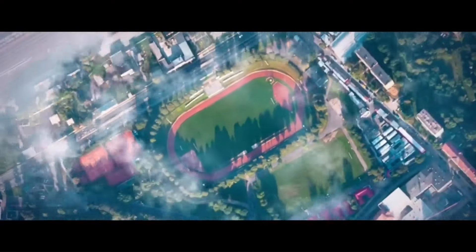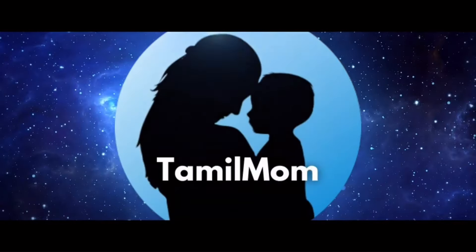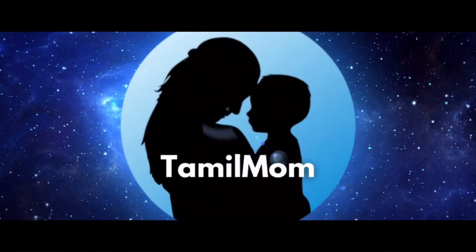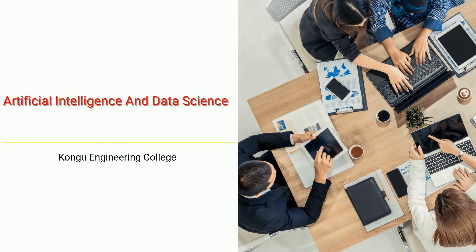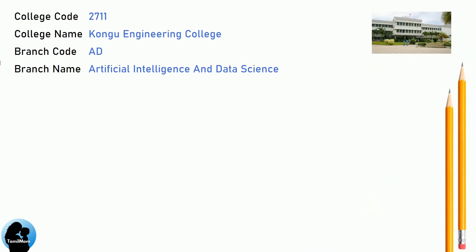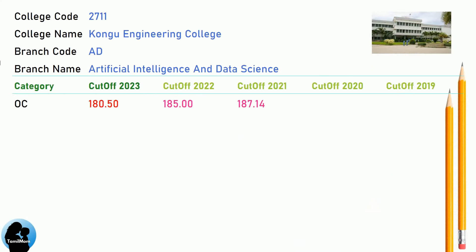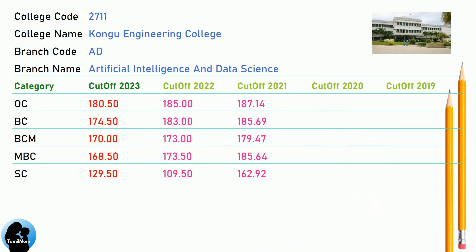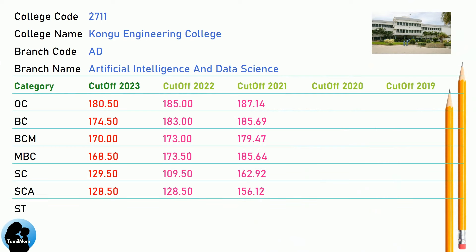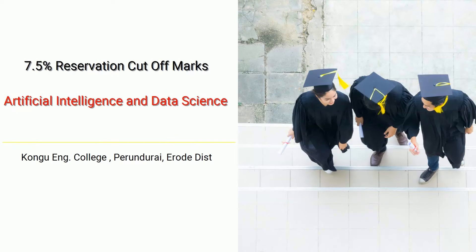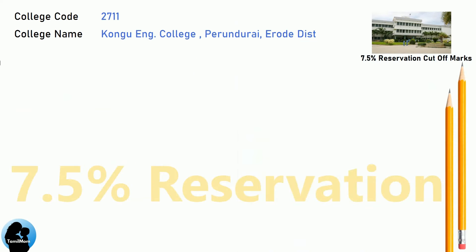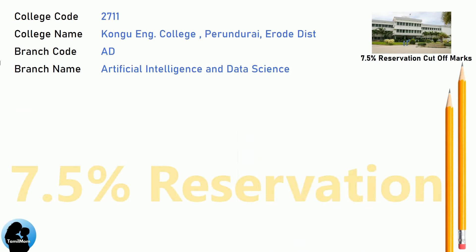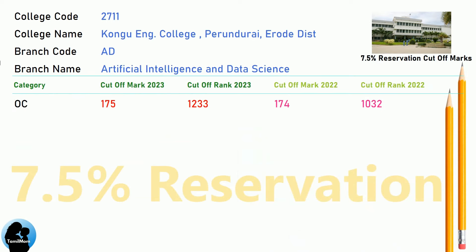Kongu Engineering College DNA Cut-Off Marks for Round 1, Round 2, and 7.5 Reservation — DNA Cut-Off for Kongu Engineering College in Artificial Intelligence and Data Science. DNA 7.5 Reservation Cut-Off for Kongu Engineering College in Artificial Intelligence and Data Science.